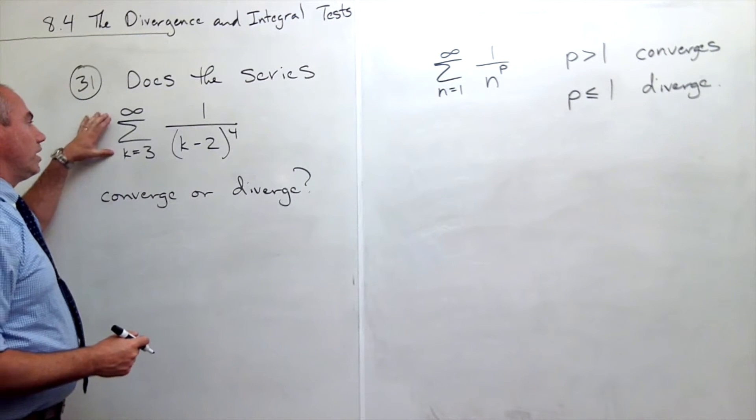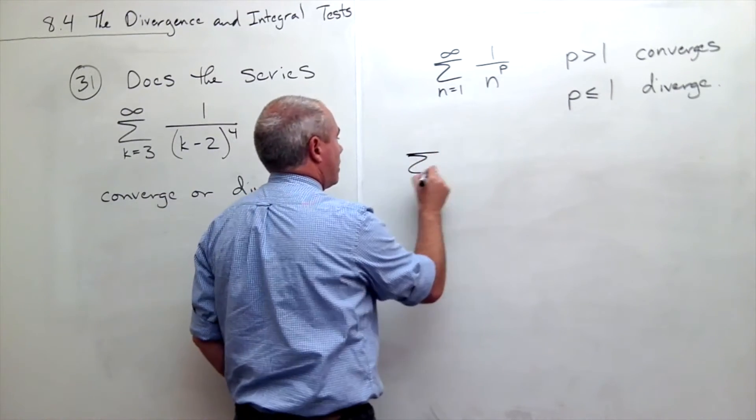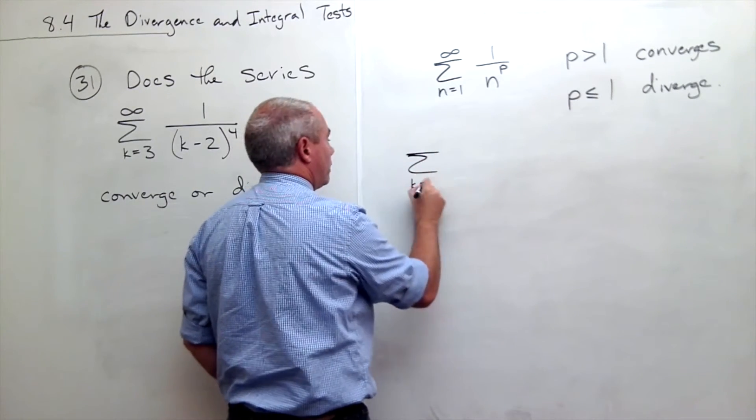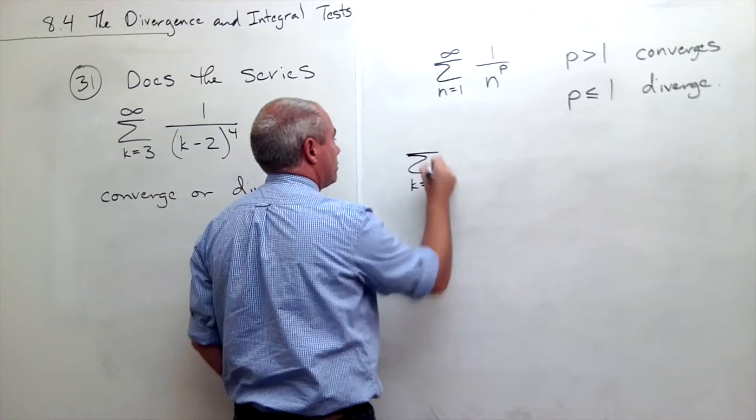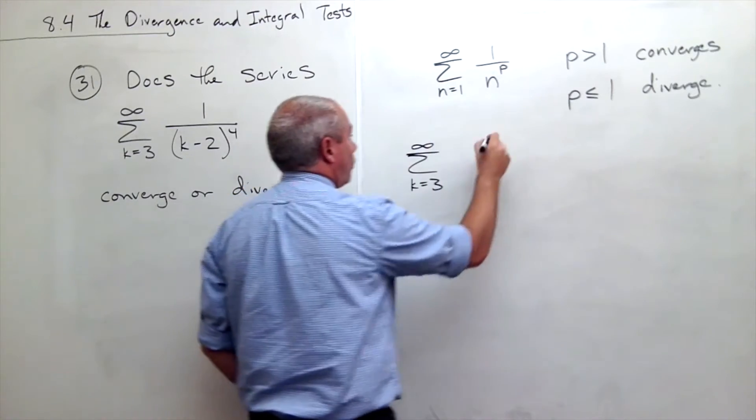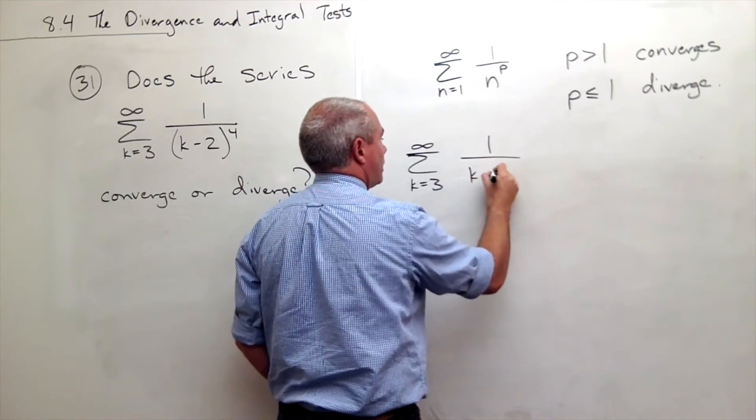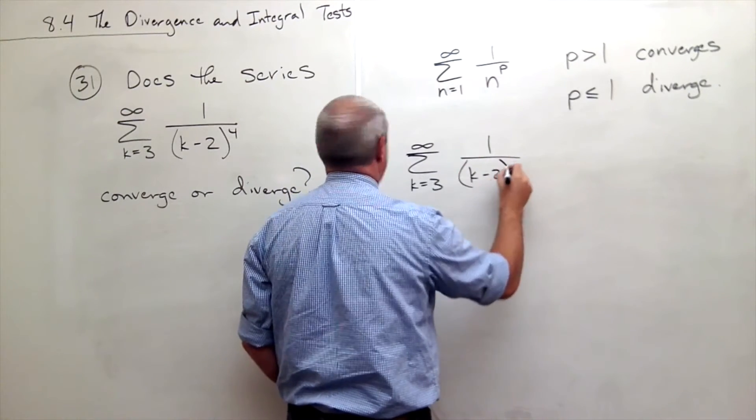Now, let me rewrite this series over here. I've got sum k going from 3 to infinity of 1 over (k minus 2) to the 4th.